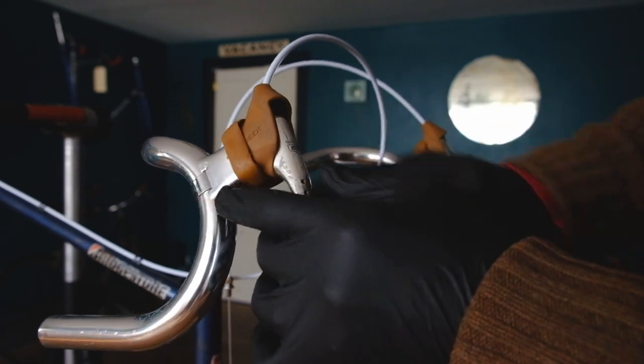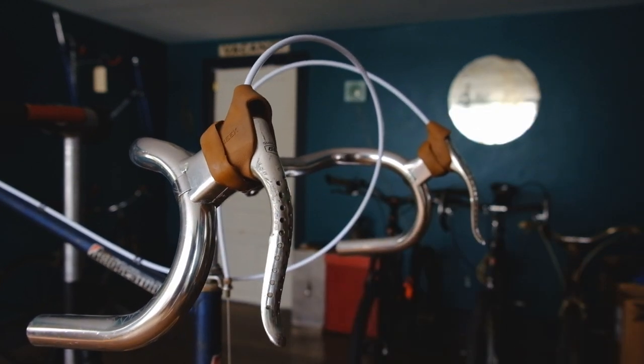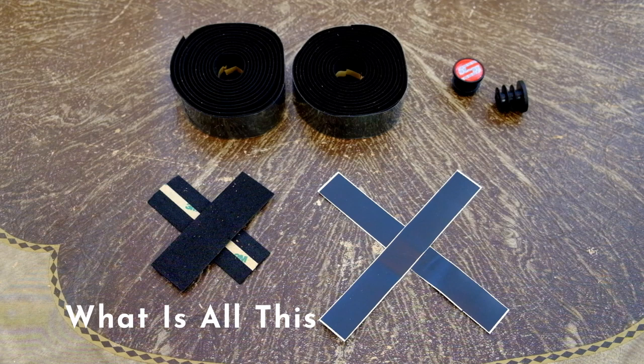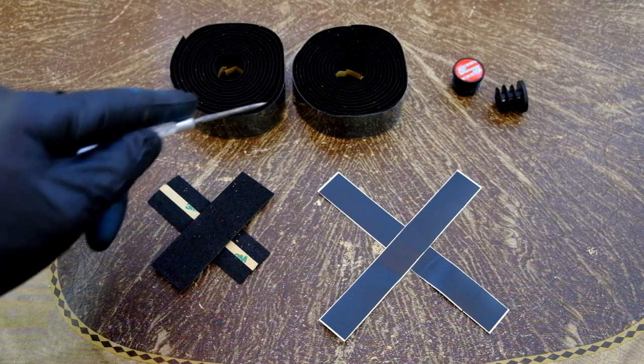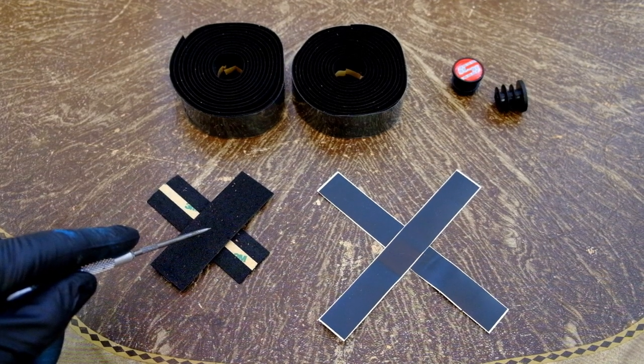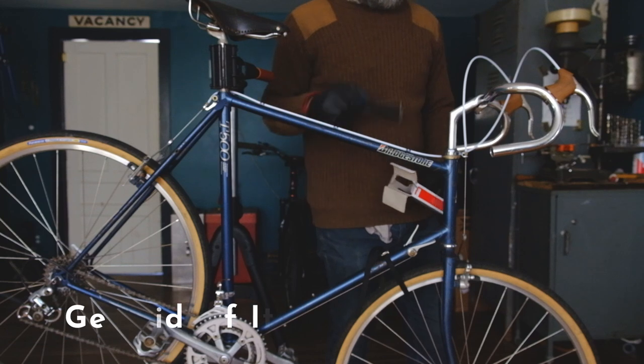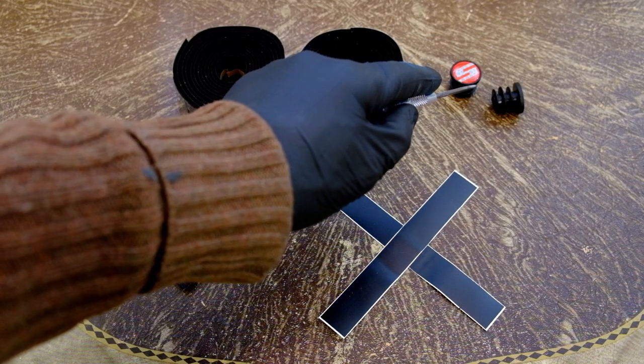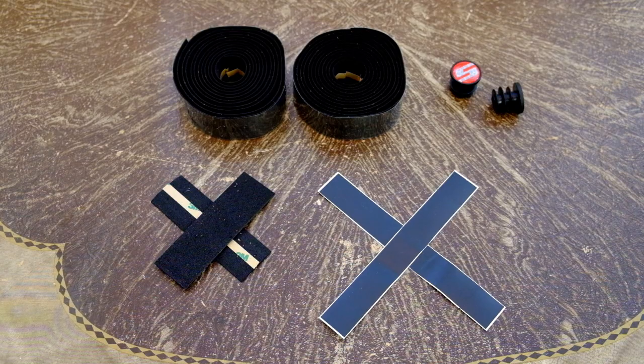Those little suckers will put up a fight sometimes. What's in the box? We have two rolls of adhesive-backed polyurethane foam tape, two short strips of same, two strips of that wretched electrician's tape they always send, and two bar end plugs so you don't apple core your kidneys when you slam.